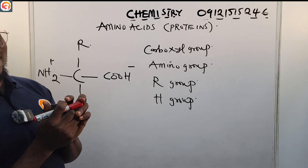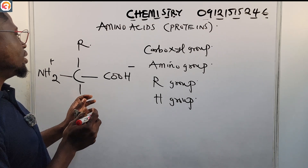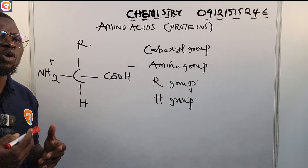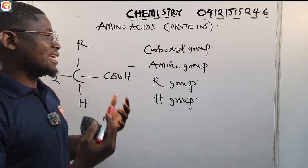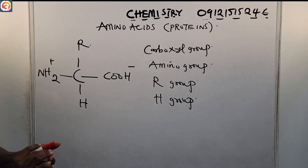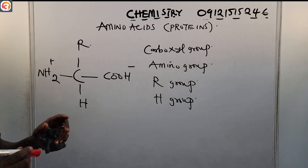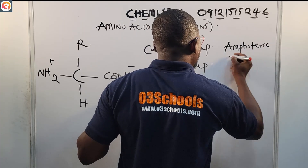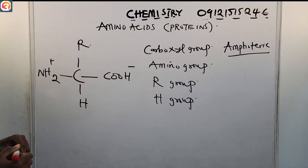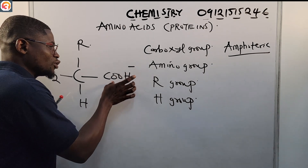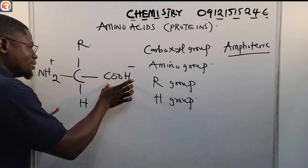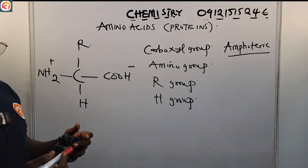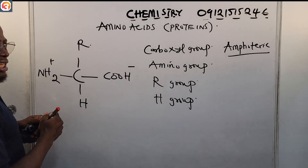Once you see a carbon atom bonded to a carboxylic acid group and an amino group, your mind should run to an amino acid. It is amphoteric — meaning it can behave as an acid because of the carboxyl group, or as a base because of the amino group.